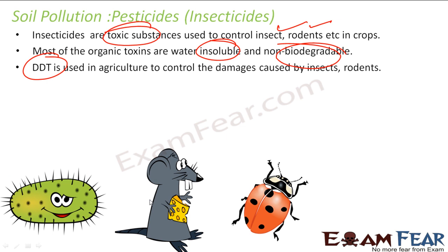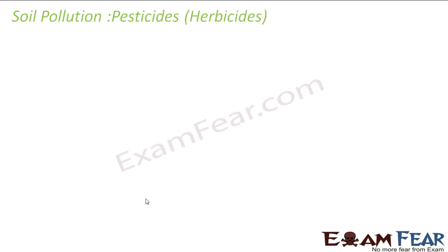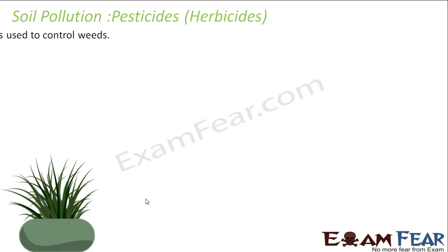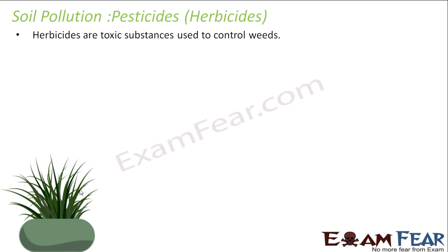but they are still used because they control insects. DDT was used in agriculture to control insects and rats, but it is no longer used because it is harmful. Herbicides are toxic substances used to control weeds that grow on their own on agricultural land.